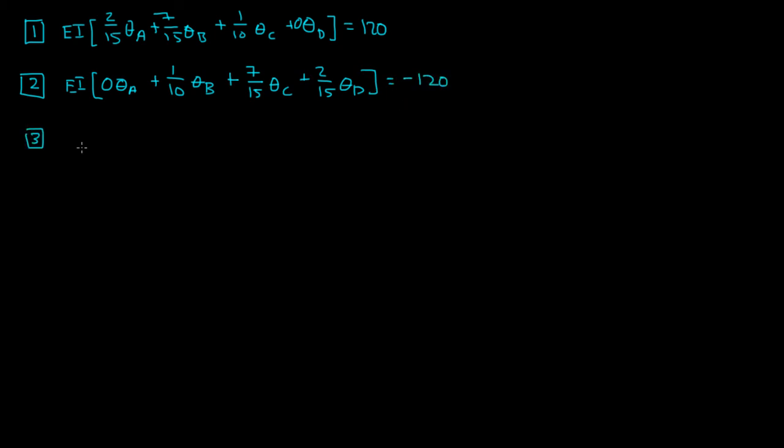Okay, then you had 3 here, EI, you had 4 over 15 theta A plus 2 over 15 theta B plus 0 theta C plus 0 theta D is equal to 0.